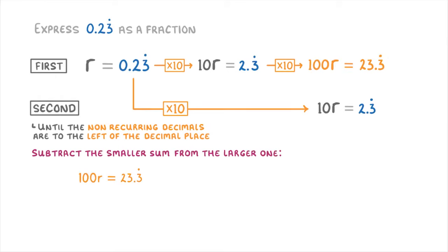So 100r equals 23.3 recurring minus 10r equals 2.3 recurring. And for things like this where you're subtracting one entire equation from another, you just do the left side first and then the right side.